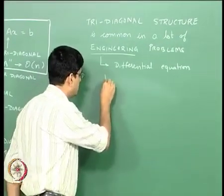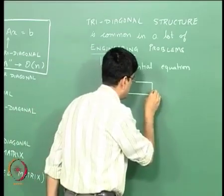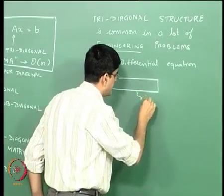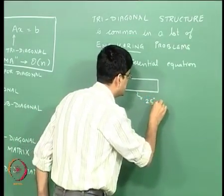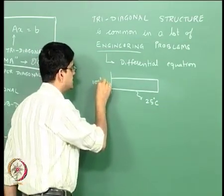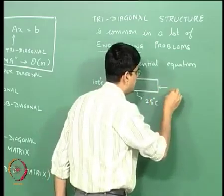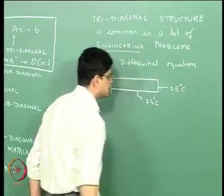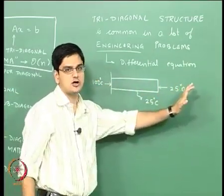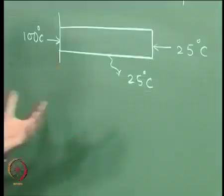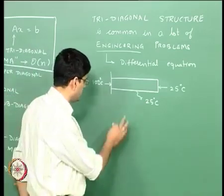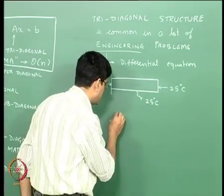Let us consider a rod that is losing heat to the surroundings at 25 degrees Celsius. One end of the rod is heated and kept at 100 degrees Celsius, and the other end is kept at 25 degrees Celsius. We want to find out how the temperature varies along this particular rod.